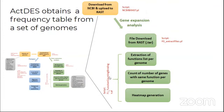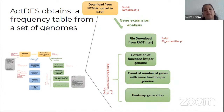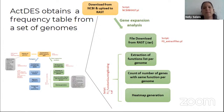Hello everybody. Thanks Jana. As Jana has said, ACDES is a set of scripts that produces, from a set of genomes, a frequency table that is a comparative of the number of copies that a certain function has in actinobacterial genomes. I'm going to give you a brief introduction about how ACDES works.